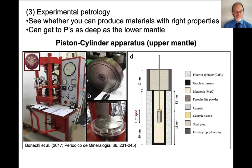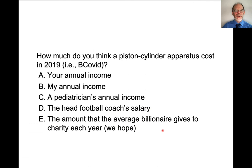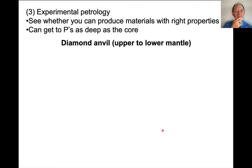We can also use experimental petrology to see whether we can produce materials that have the right properties in terms of density, seismic velocity, and so on. With the right equipment, we can get pressures as deep as the lower mantle. Here is an example of a piston-cylinder apparatus — a certain kind of press where a piston inserts into a hole. It turns out these cost approximately the annual income of a pediatrician, so they are not cheap instruments, but they are not out of reach of research institutions.